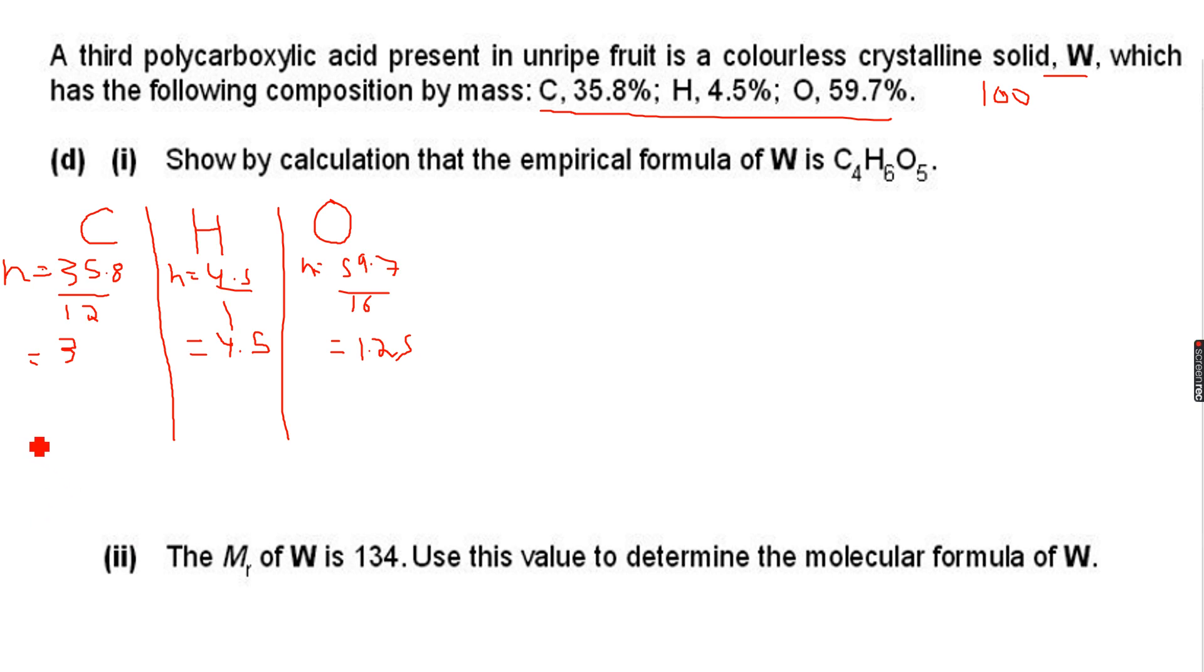So it's 3 is equal to 4.5 is equal to - oh no, sorry, I did a mistake. This is not 1.25, this is 3.73. I'm really sorry about that. This is 3.73, so we erase the 1.25 and we write 3.73.